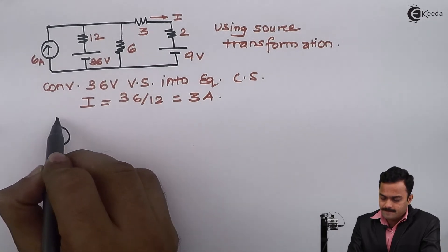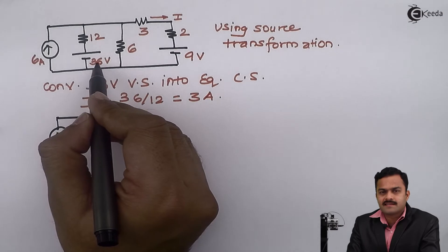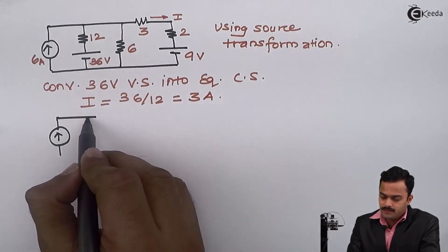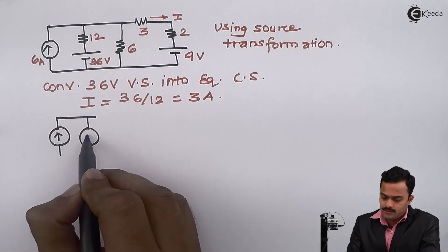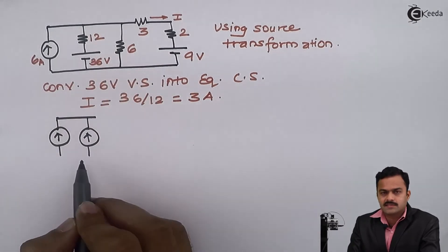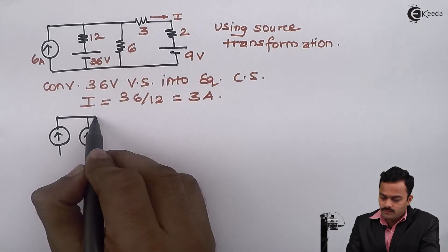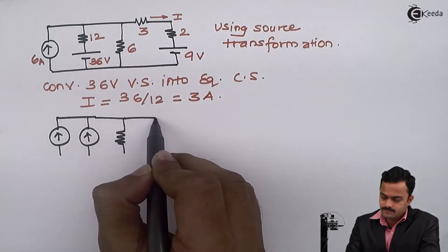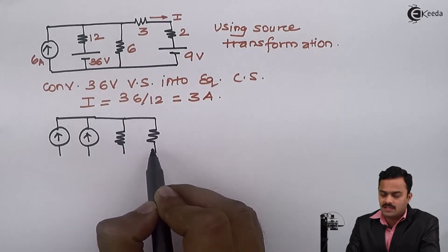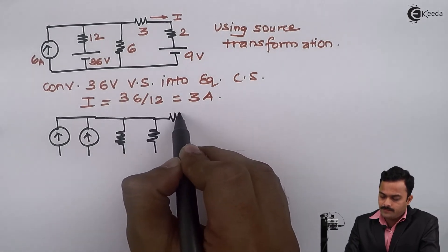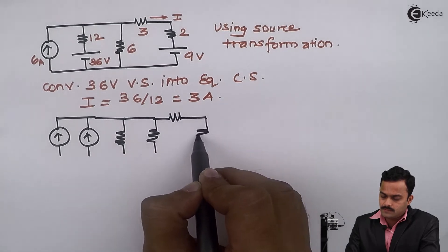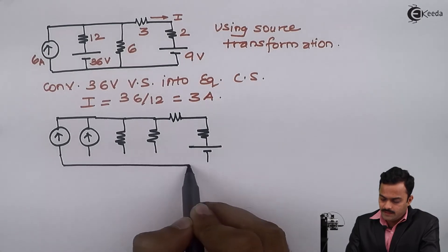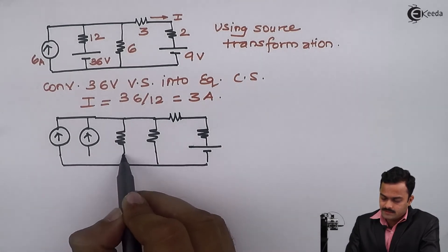6 amperes remains as it is. 36 volts is converted into an equivalent current source of 3 amperes with positive polarity upward, hence the current direction is upward. 12 ohms will come in parallel with that current source. 6 ohms remains as it is. The remaining part of the circuit will be as it is.